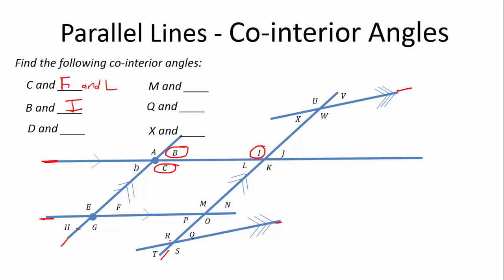What about D? D, let's put a square around D. It's co-interior only with E.